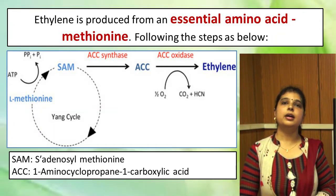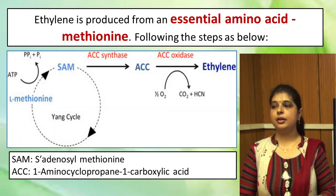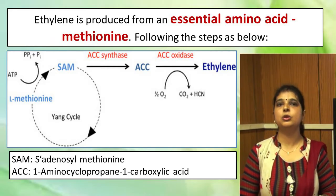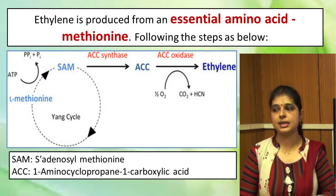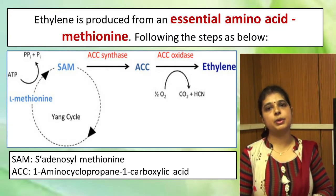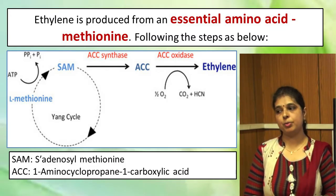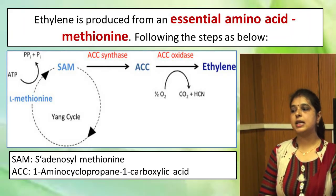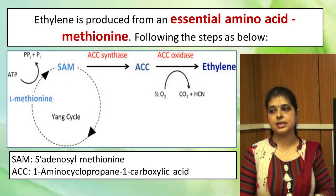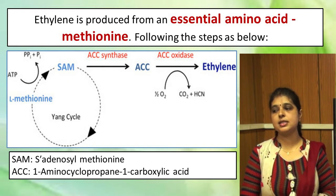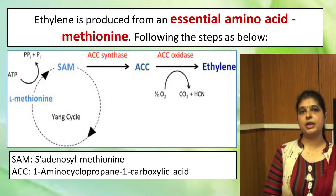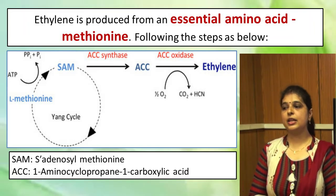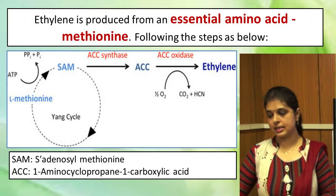Ethylene formation takes place from an essential amino acid called methionine — a sulfur-containing amino acid. L-methionine is the main precursor of ethylene formation. Methionine is converted into SAM (S-adenosyl methionine), then by the action of ACC synthase, ACC (1-aminocyclopropane-1-carboxylic acid) is formed. By the action of ACC oxidase, ethylene formation takes place from the ACC compound.